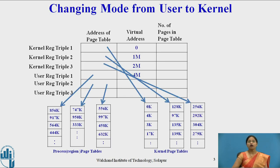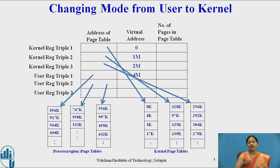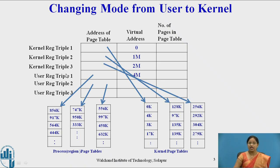Now let us see how there is a change in mode from user to kernel. In Unix, we have two levels: user level and kernel level. Whenever a process executes in the system, it moves between user mode and kernel mode. As shown in this figure, we have register triples — the first three are for kernel mode and the next three are for user mode. The kernel register triples start at virtual address 0 and range up to 4M-1.